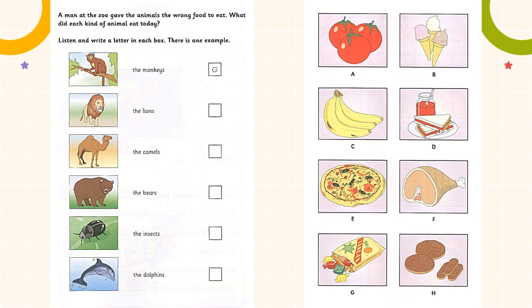The insects at the zoo usually eat leaves. I know, they do — they love those. But the new man gave them fruit today, some old bananas. He cut them into pieces and put them in their cages. They didn't eat much.